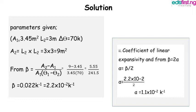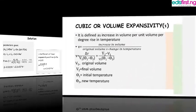To find the coefficient of linear expansivity, recall that beta equals 2 times alpha. So alpha equals beta over 2. Dividing 2.2 times 10 to the power minus 2 by 2, our answer is 1.1 times 10 to the power minus 2 per Kelvin.